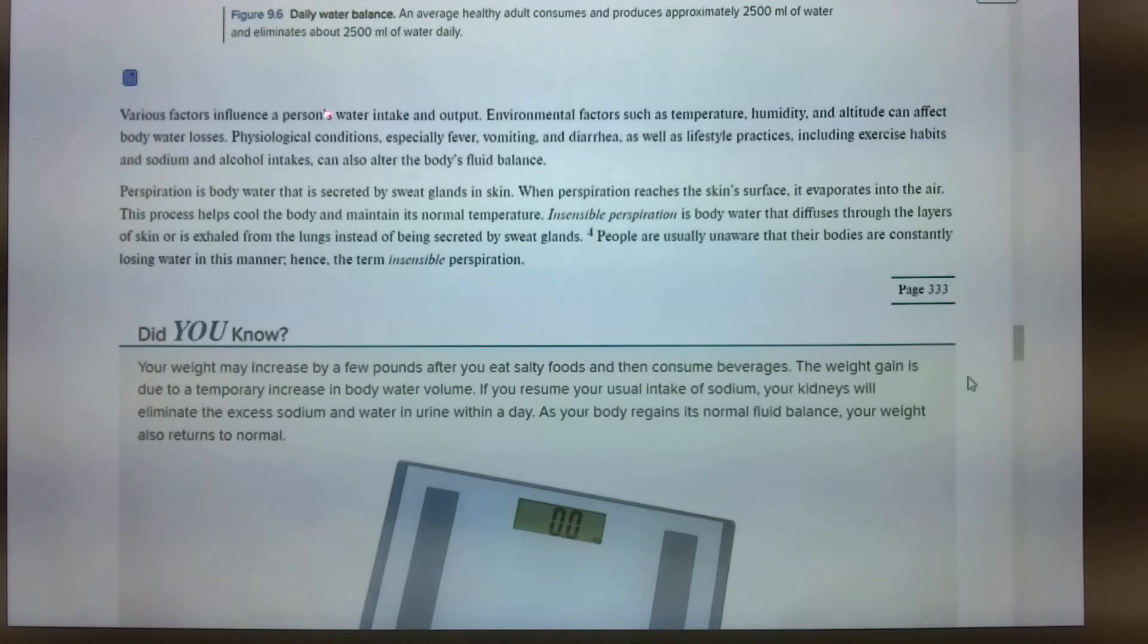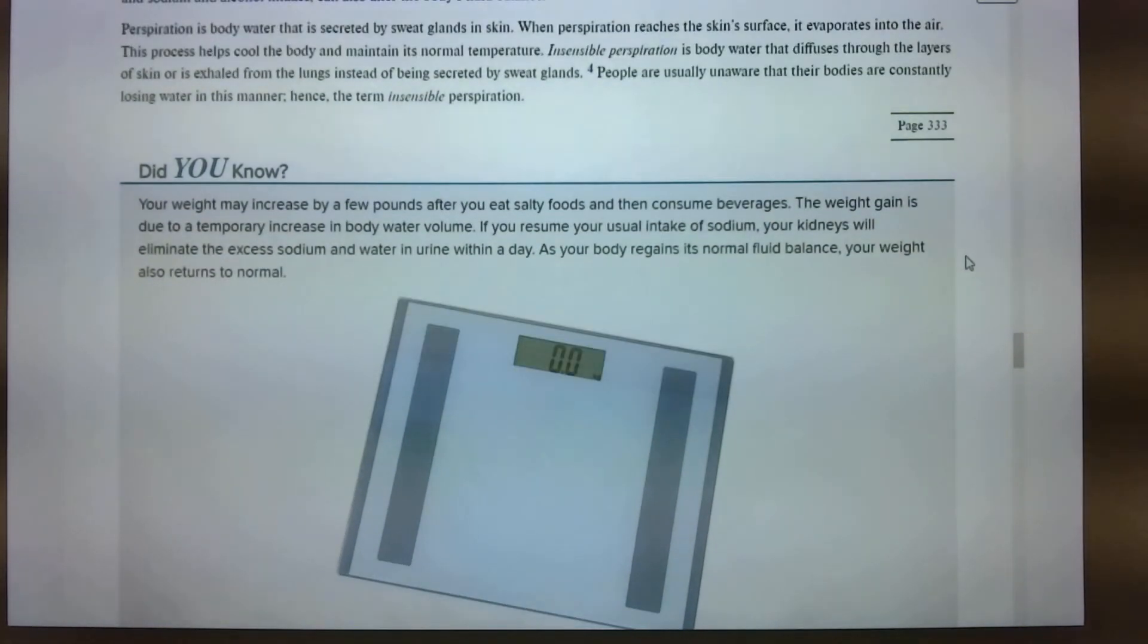Environmental factors. Physiological conditions, especially fever, vomiting, diarrhea, as well as lifestyle, including exercise habits, alcohol intake. Well, that one shows up quite a bit. We know that alcohol interferes with our vitamin intake, right? We talked about that, those water-soluble vitamins. Perspiration is body water that is secreted by sweat glands. When perspiration reaches the skin surface, it evaporates into air. This also helps cool the body down and maintains its normal temperature. Okay? So let's get into something a little bit more scientific, isn't it? I find the kidneys very interesting. Yes, they help filter out our urine and blood, but we can't live without them, okay? Or dialysis would not be a thing.